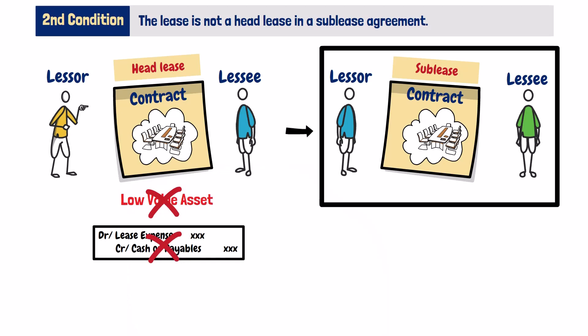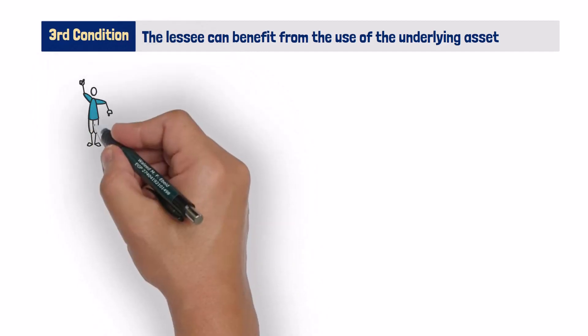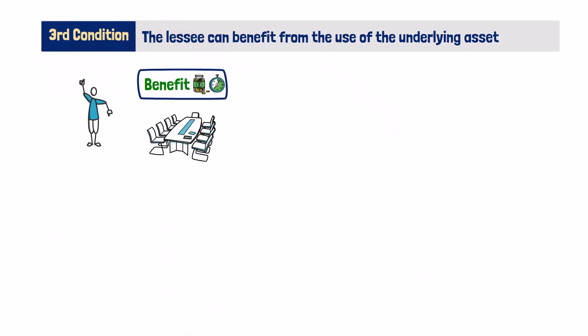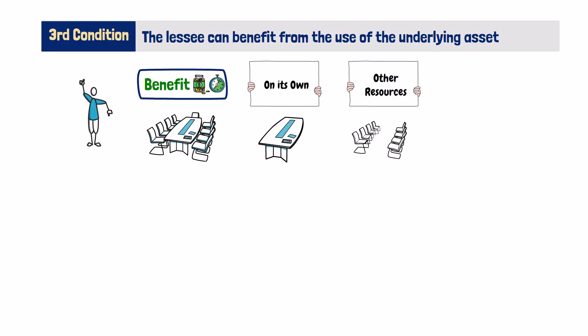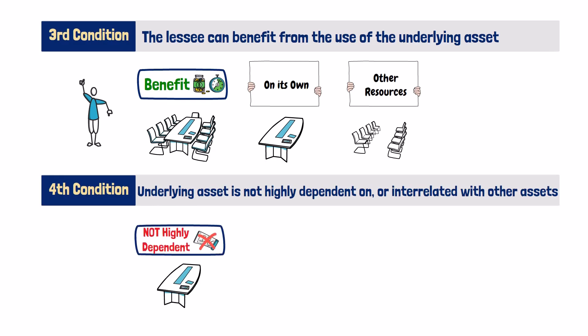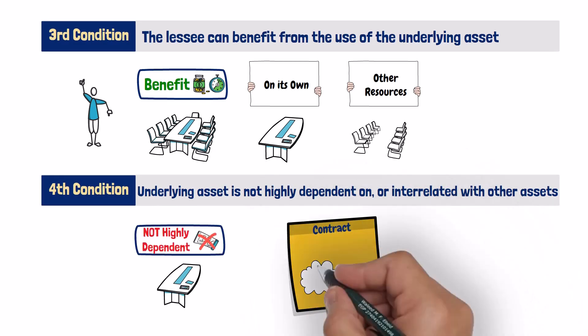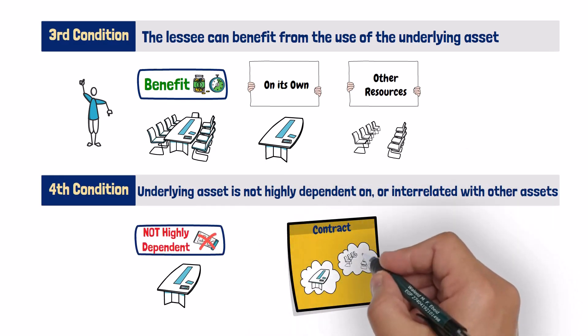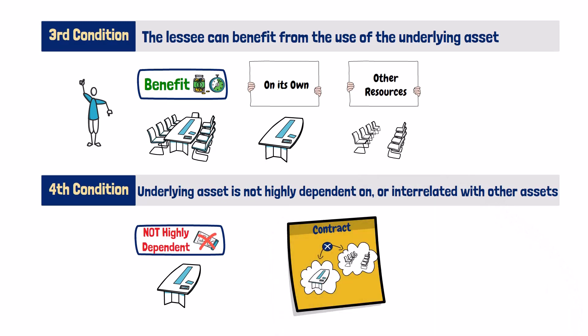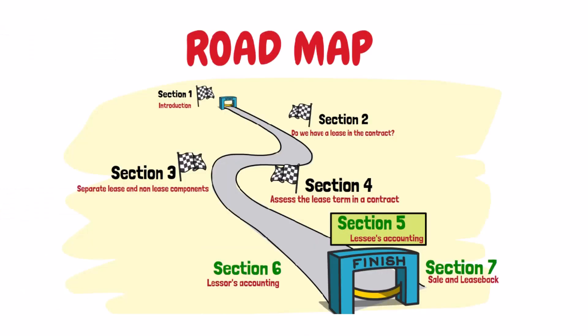The third condition: the lessee can benefit from the use of the underlying asset, whether that asset is used on its own or together with other resources that are readily available to the lessee. The fourth condition: the underlying asset is not highly dependent on, or highly interrelated with, other assets. We already saw these two conditions in the third section of this course, when we talked about the separation of lease components within a contract.